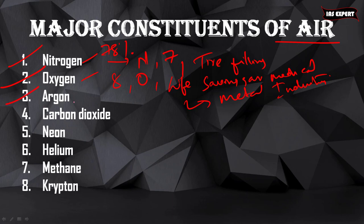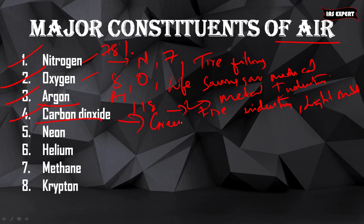Coming to the third constituent: argon. Symbol is Ar and atomic number is 18. It is used in the fire industry and used in light bulbs. Coming to the fourth: greenhouse gas CO2, which helps in photosynthesis of plants.